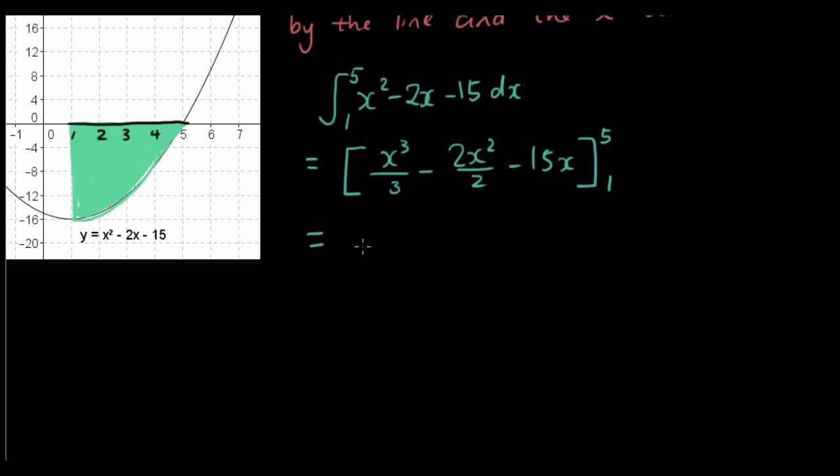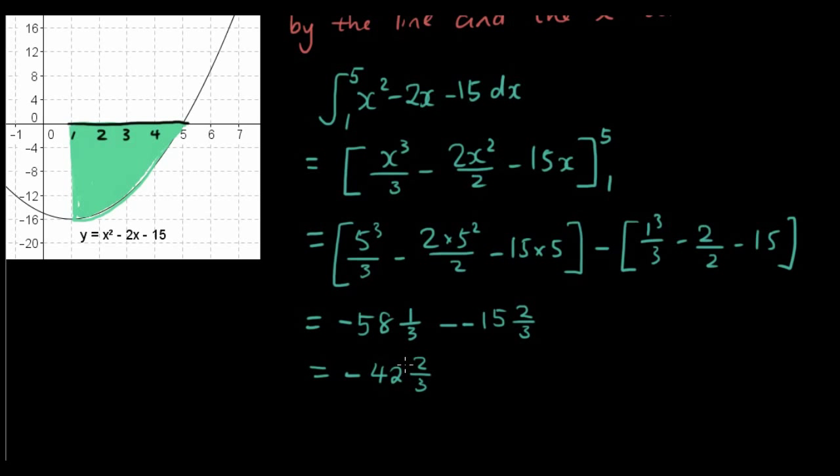And now let's substitute in the number 5 first. So 5 cubed over 3 minus 2 times 5 squared over 2 minus 15 times 5, minus when we substitute 1 into the equation: 1 cubed over 3 minus 2 over 2 minus 15. Put it in the calculator. So the answer is negative 42 and 2 thirds. And you probably want to just mentally check that it's around there.